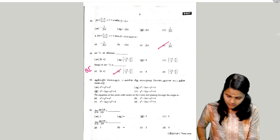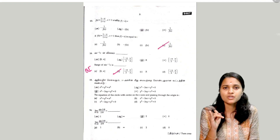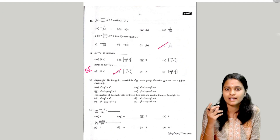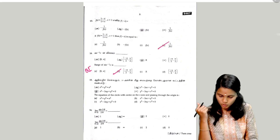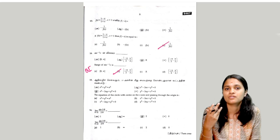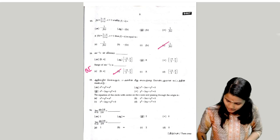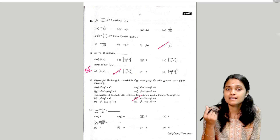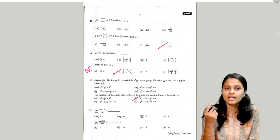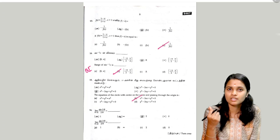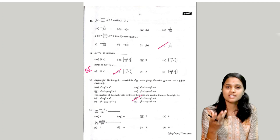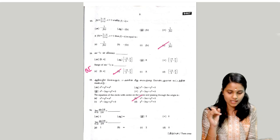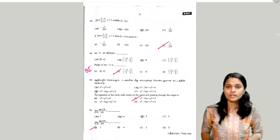The next question is the equation of the circle with the centre on the x-axis. So the answer is B. The next question: the limit function of sine 2θ divided by 2θ — the answer is 1.